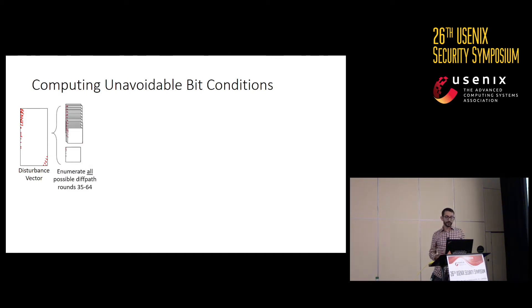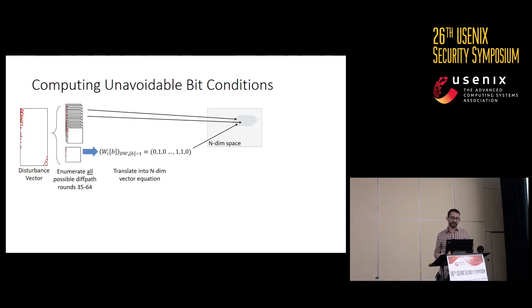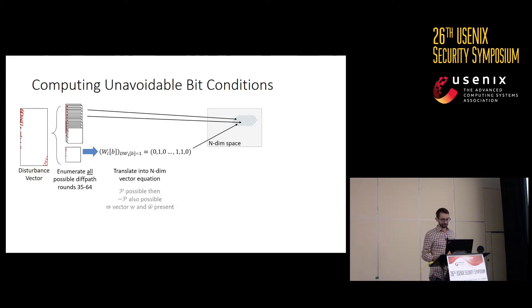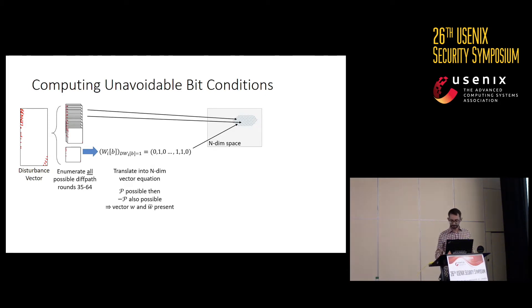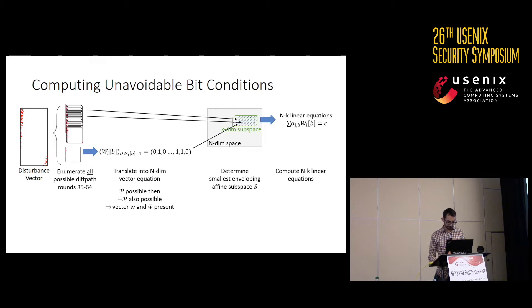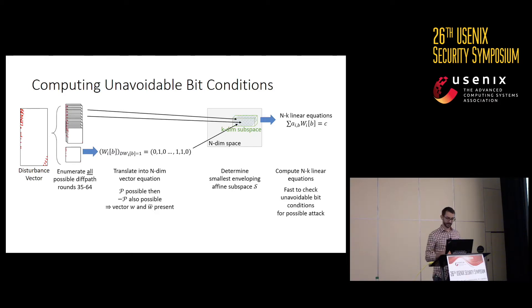To compute unavoidable bit conditions, we start with the disturbance vector and enumerate all possible differential paths from rounds 35 to 64. We translate each differential path into an n-dimensional vector equation. It's important to note that if a differential path is possible, its negative is also possible — so if vector w is in this space, its complement is also present. We then determine the smallest enveloping affine subspace — a vector space translated off the origin by some displacement — and that gives us n-minus-k linear equations, which are the fast-to-check unavoidable bit conditions we wanted.